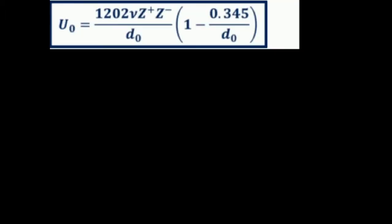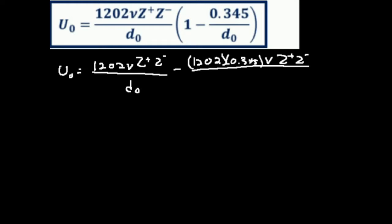With the Kapustinsky equation, we're going to get the quadratic formula, but might as well just do it. So we're going to multiply this whole thing out in front times the 1, and then times the negative 0.345 over D. So what we're going to get is U0 equals 1202 V Z+ Z- all divided by D0, and then we're going to subtract 1202 times 0.345 times V times Z+ times Z- all divided by D0 squared.